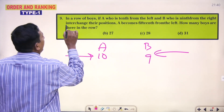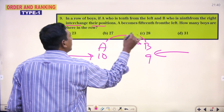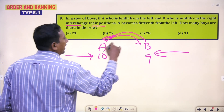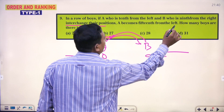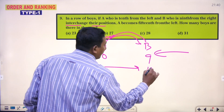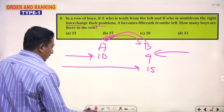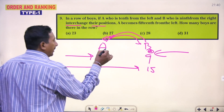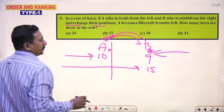Then interchanging their positions. If A is interchanging to their position, so B is here and A is to be. A becomes 15th from the left hand. Now A becomes 15th from the left hand. How many boys are there? So actually this place now A occupied and B is here, B before this position.